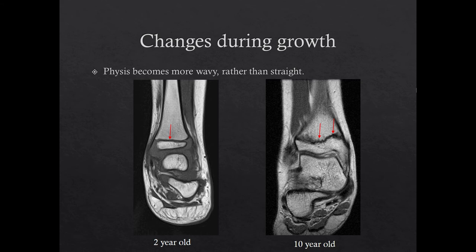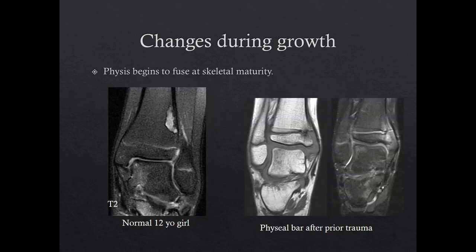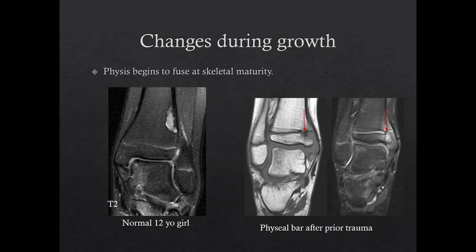This will represent the normal initial site of physeal fusion. Finally, a normal finding seen during growth is physeal fusion, which is a gradual process during adolescence. The physis may appear asymmetric, or you may not see the normal high T2 signal along the entire physis. Here is an example of normal beginning physeal fusion of the distal tibia in a 12-year-old girl, where the central medial aspect of the physis is less visible. This patient also has an incidental non-ossifying fibroma.